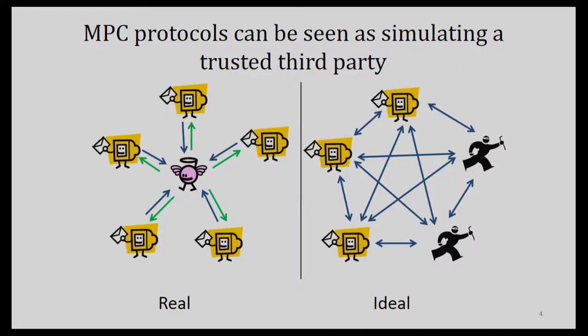Another way of looking at what we try to do with multi-party computation is simulating a trusted third party. Doing all this would be completely trivial if there was a third party that every party fully trusted and could do all the computation for them. All that would be necessary is for each party to send their own inputs to this trusted third party, who would compute the results and send them back without telling anybody what anybody else's input data was.